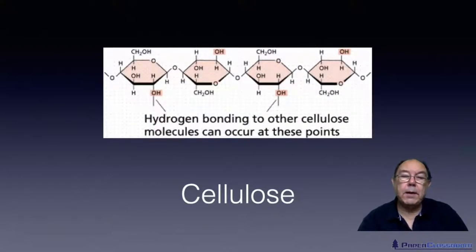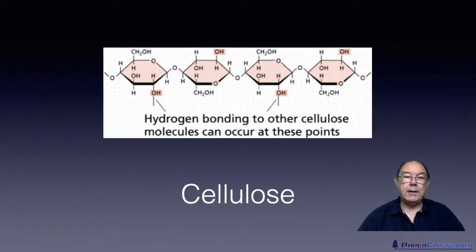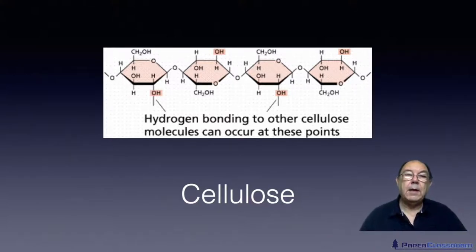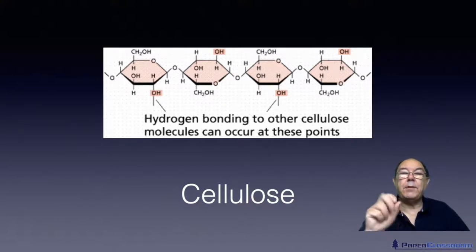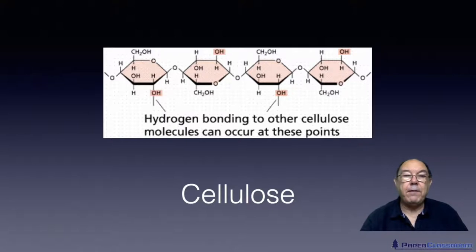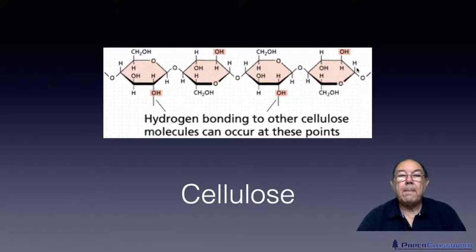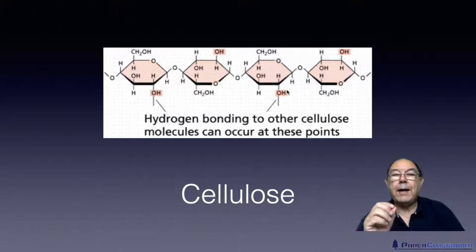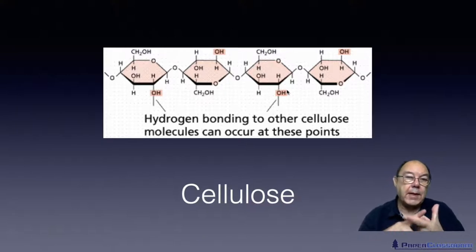So this is cellulose. The plant takes in water and carbon dioxide, produces glucose molecules, and then another part of the plant strings all the glucose molecules together. If it strings them in exactly the same form it forms starch; if it flips every other molecule then we have cellulose. The important thing about cellulose is all these hydroxyl groups — we've highlighted some of them there.